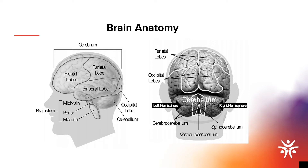The brain tissue is surrounded by the skull and a tough membrane called the dura. Within and surrounding the brain tissue and dura are many arteries, veins, and the cranial nerves. Therefore, trauma to the head may damage the skull, the blood vessels, the nerves, the brain tissue itself, or all of the above.